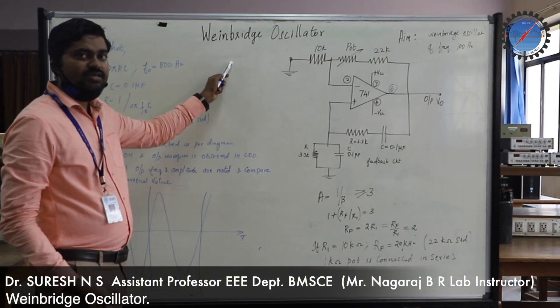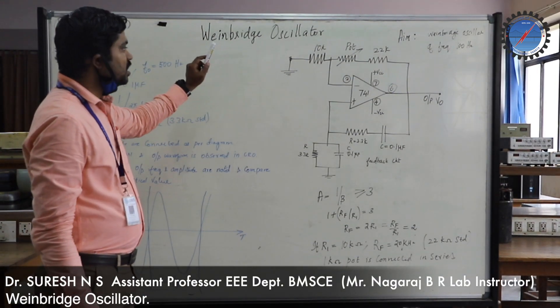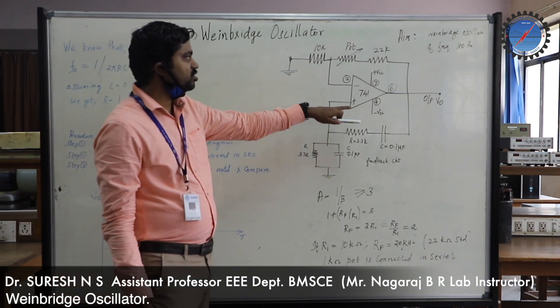The experiment is Wien bridge oscillator. It is the sixth experiment and uses IC741.